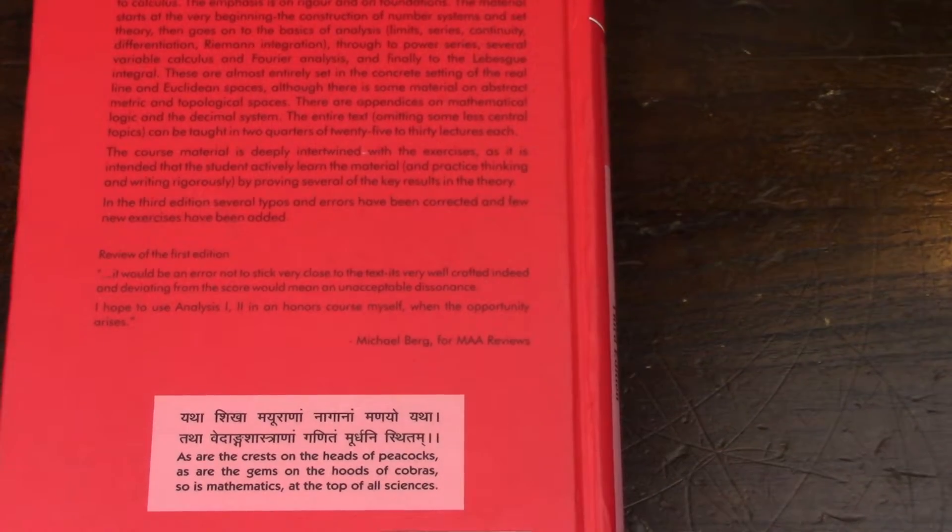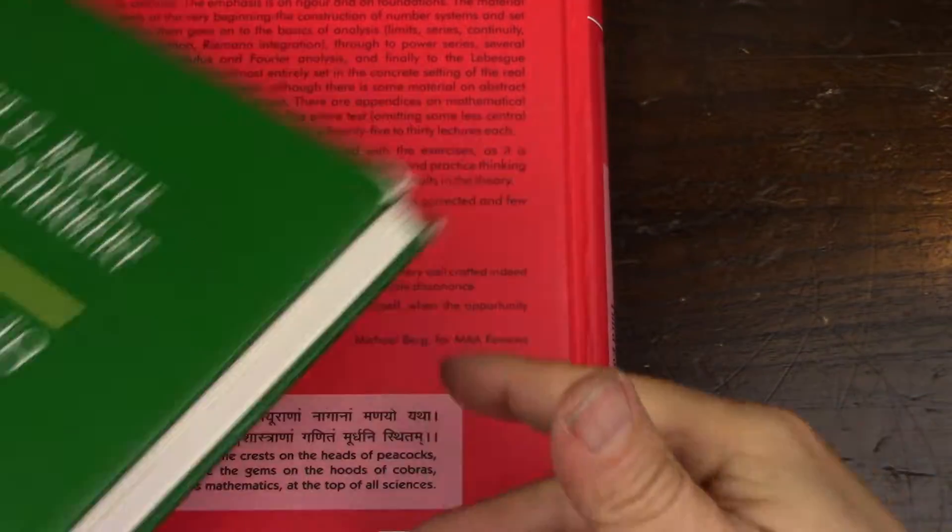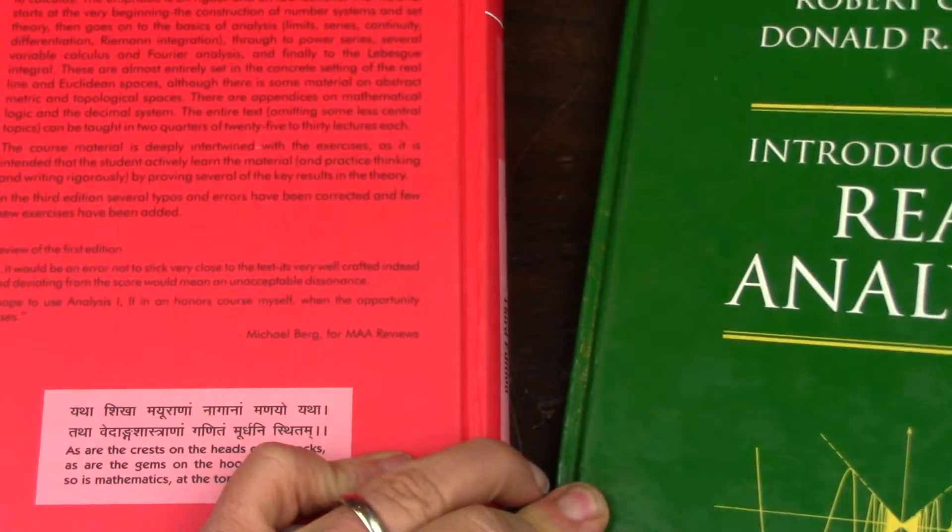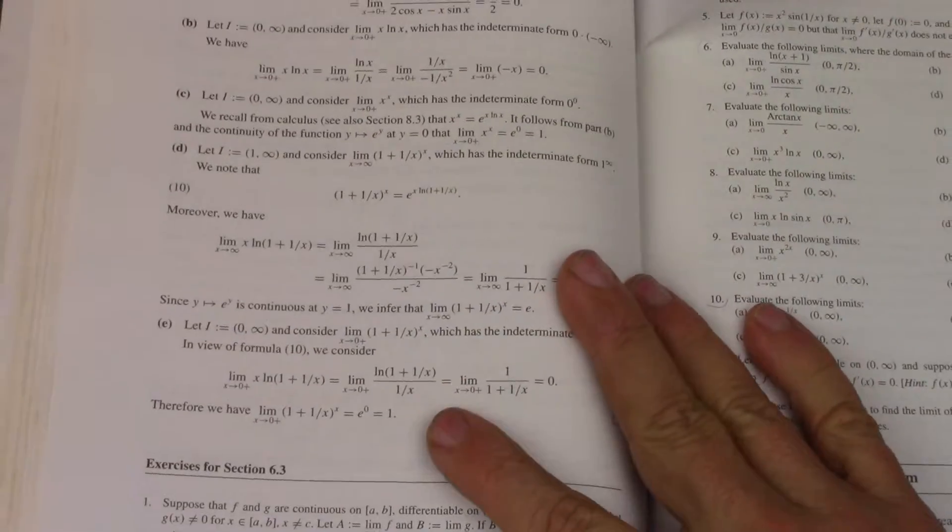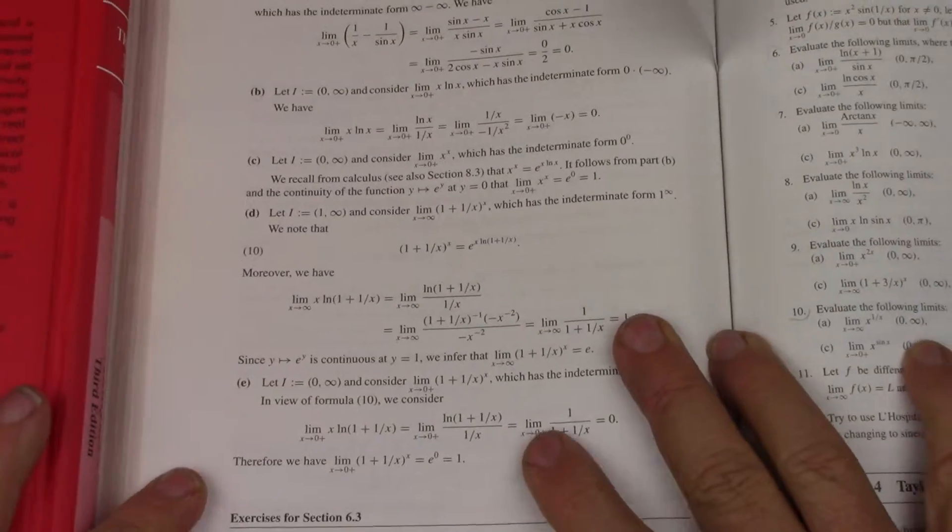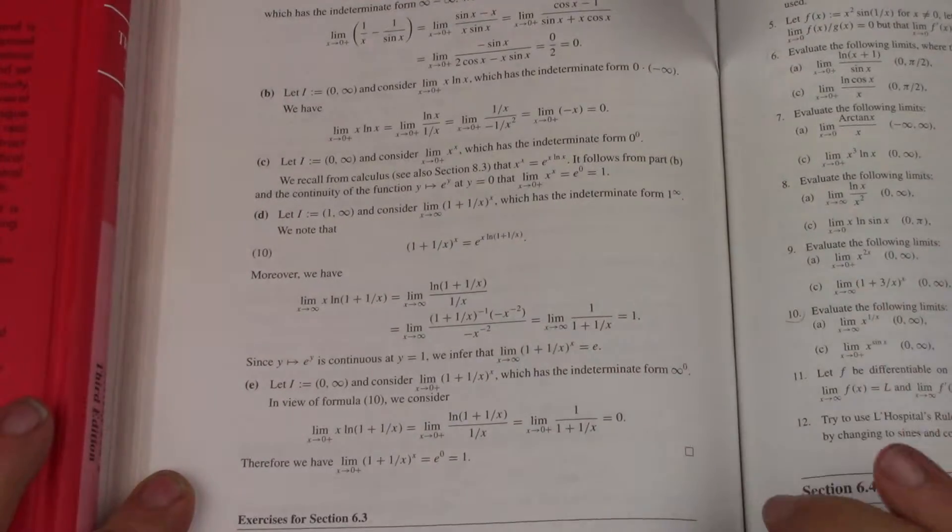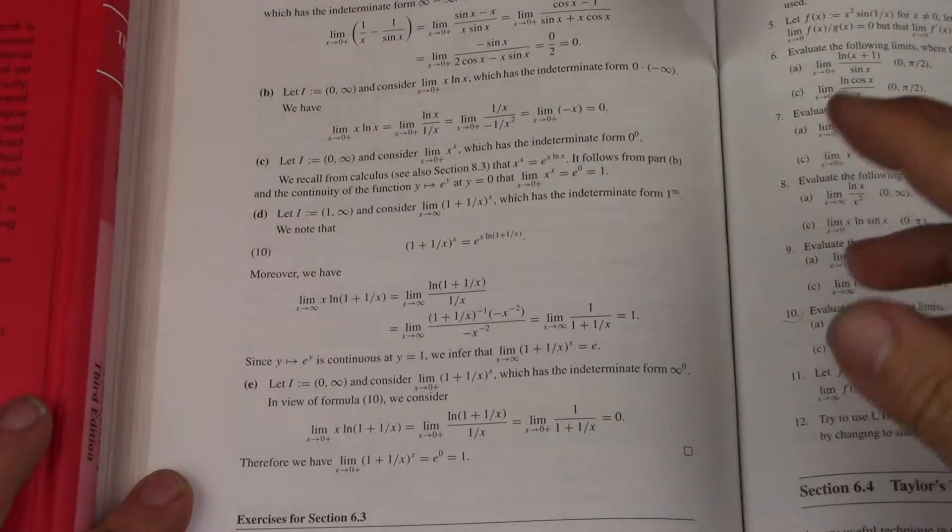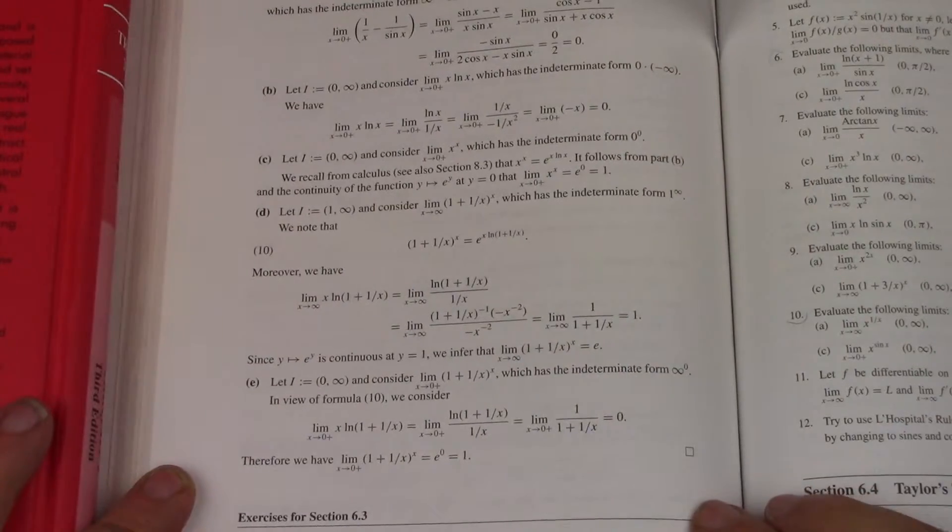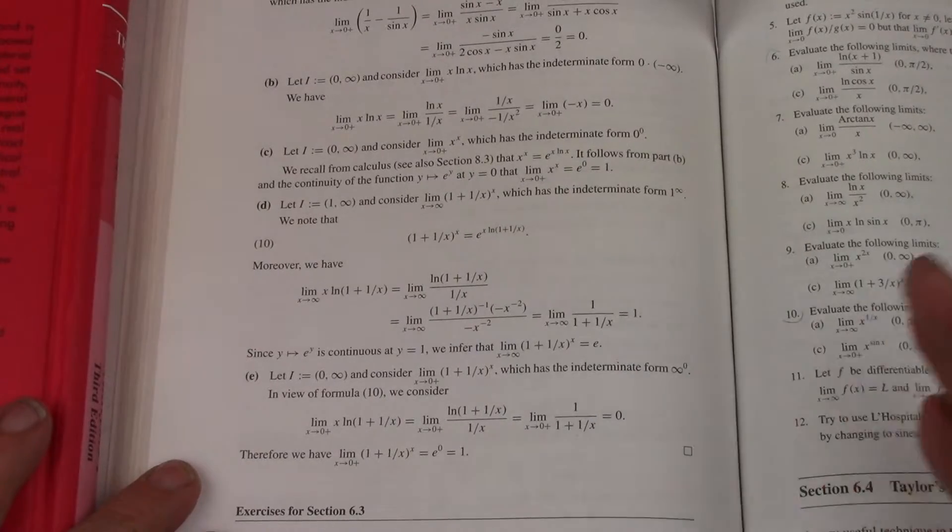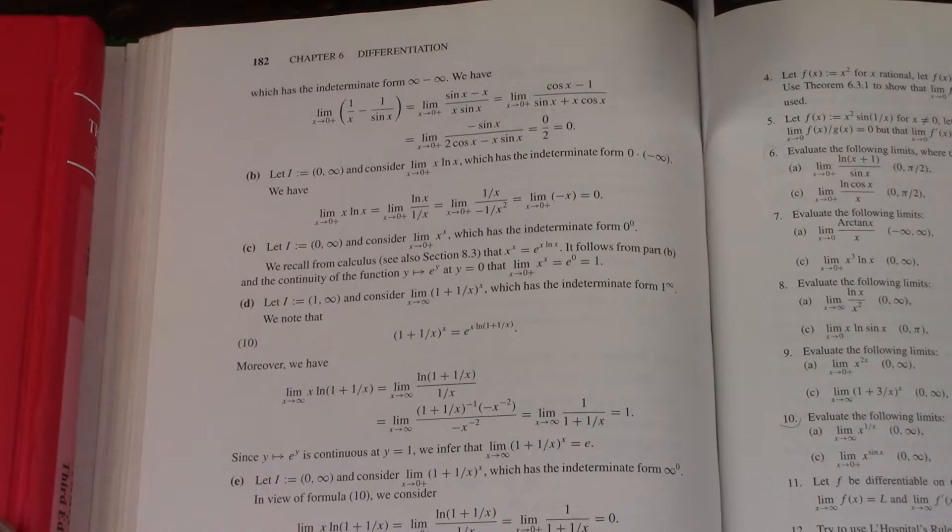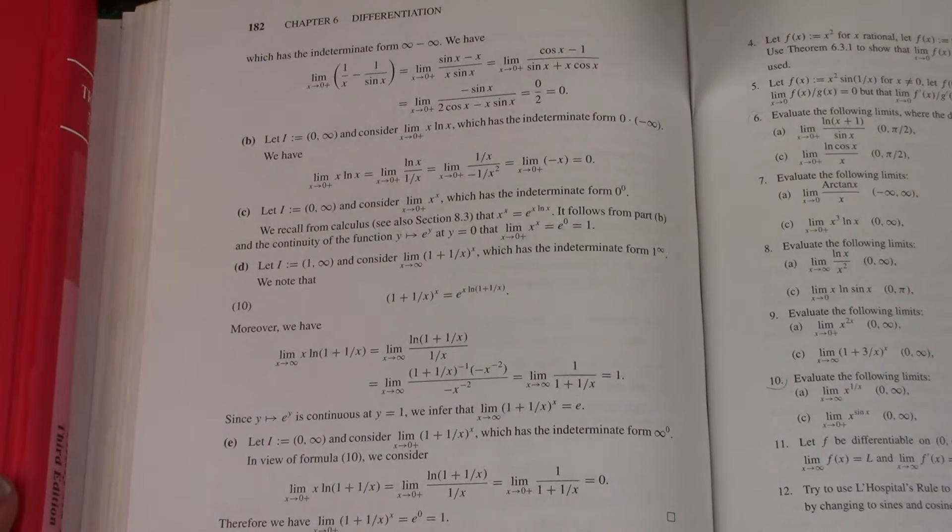But of course, one of the things that we must not ding some of these books for is that it all depends on the level at which that author is going for. In some cases, some of these theorems are really considered more calculus theorems than they are theorems that would be treated in depth in an analysis book. And so, there is more like a philosophical issue of the dividing line where calculus ends and mathematical analysis begins.